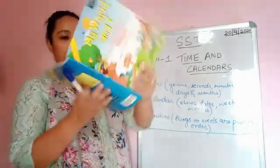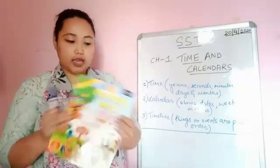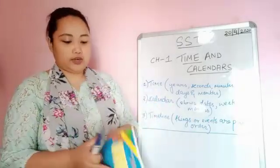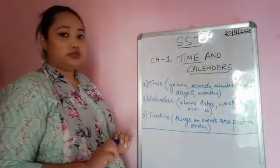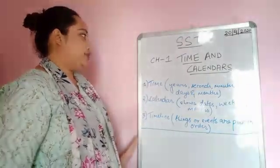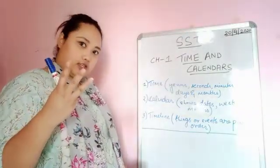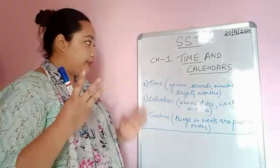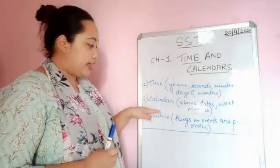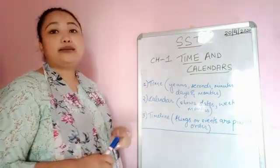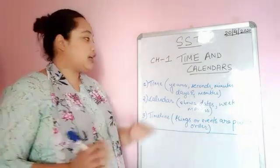I really hope you all have this book — it's called 'My World and I.' In this chapter we will be covering three topics: we will be learning about time, calendar, and also timeline. So firstly, we will start with time.